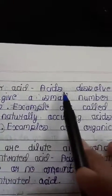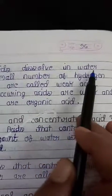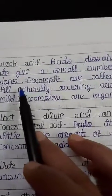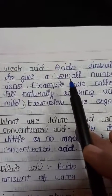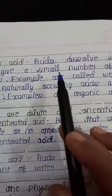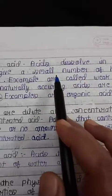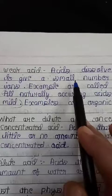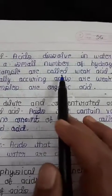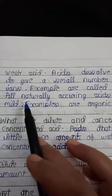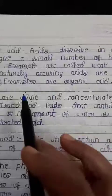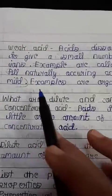After this, weak acids: what are the weak acids? Acids that dissolve in water to give a small number of hydrogen ions are called weak acids. This definition is just opposite to strong acids - strong acids give a large number of hydrogen ions, while weak acids give a small number of hydrogen ions when dissolved in water.